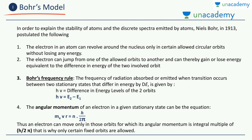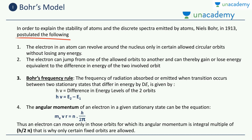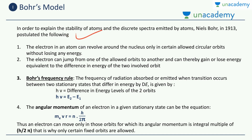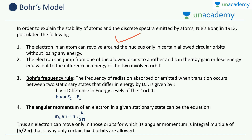The Bohr's model was developed by Niels Bohr to explain the stability of atoms and the discrete spectra emitted by atoms. In 1913 he postulated the following. The previous Rutherford model had some drawbacks: according to Maxwell's theory of electromagnetism, the electron should spiral into the nucleus, making the Rutherford model unstable. Another drawback was the discrete spectra observed, and Niels Bohr answered both questions very nicely in his model.